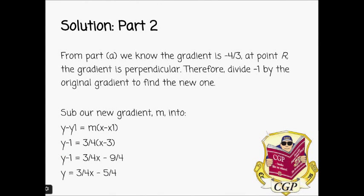Part 2. So from part A, we know that the gradient is minus 4 over 3 at point R. And we want to know the new gradient, which is perpendicular to this. Therefore we divide minus 1 by the original gradient to find the new one.